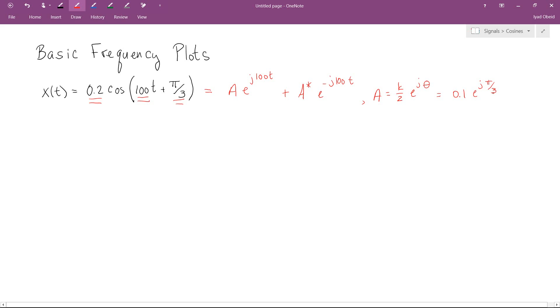So let me say one more thing for us. If a equals that, I just want to make explicit that a conjugate is going to equal k over 2 e to the minus j theta. That's by definition, that's what a complex conjugate is, which in our case will be 0.1 e to the minus j pi over 3.